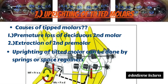The last method of space gaining is uprighting of tipped molars. Causes of tipping include premature loss of deciduous second molar or extraction of second premolar, which can cause mesial tipping of the first permanent molar. Uprighting can be done by springs or space regainers.